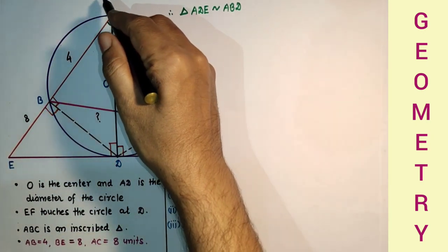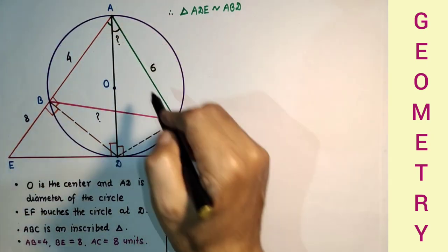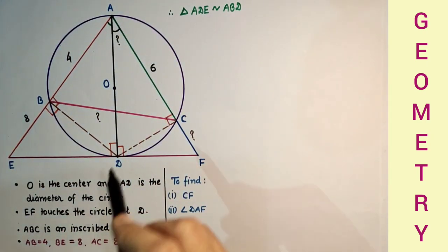And these two triangles ADF and ACD are also similar by the same AA test.